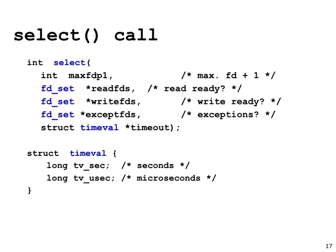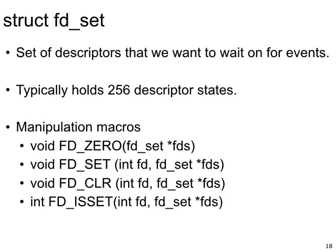For example, you can specify a five-second timeout value so that the select system call blocks for five seconds and then returns to user space. There are also a set of macros provided alongside the select system call to test for the availability of IO operations on different file descriptors. Feel free to check the man pages to understand the details of these macros.